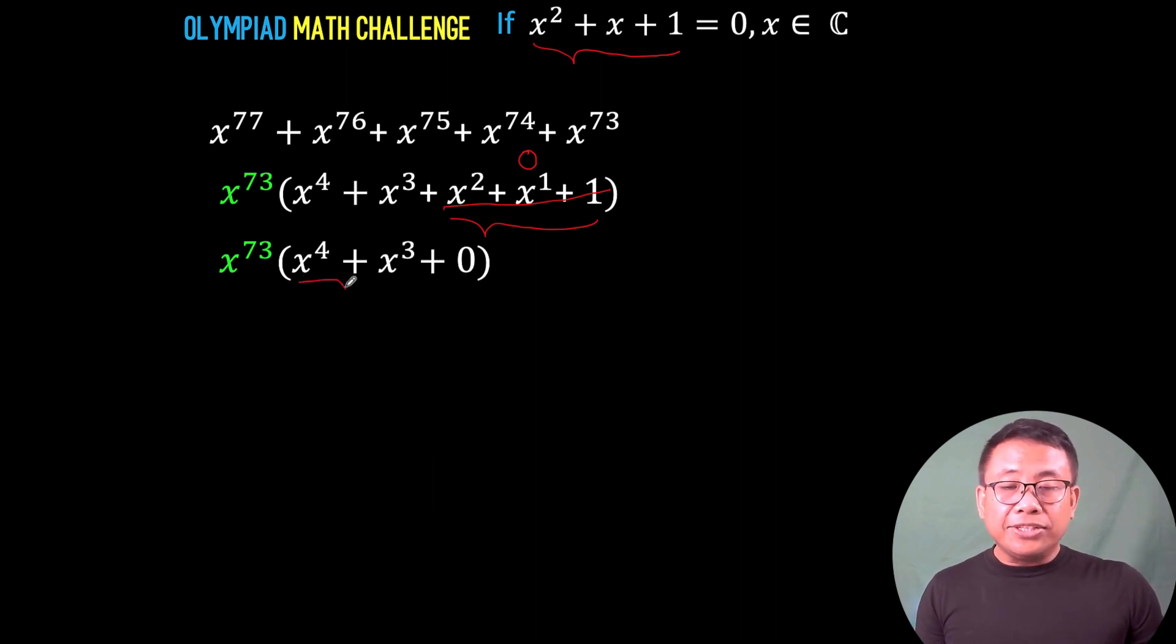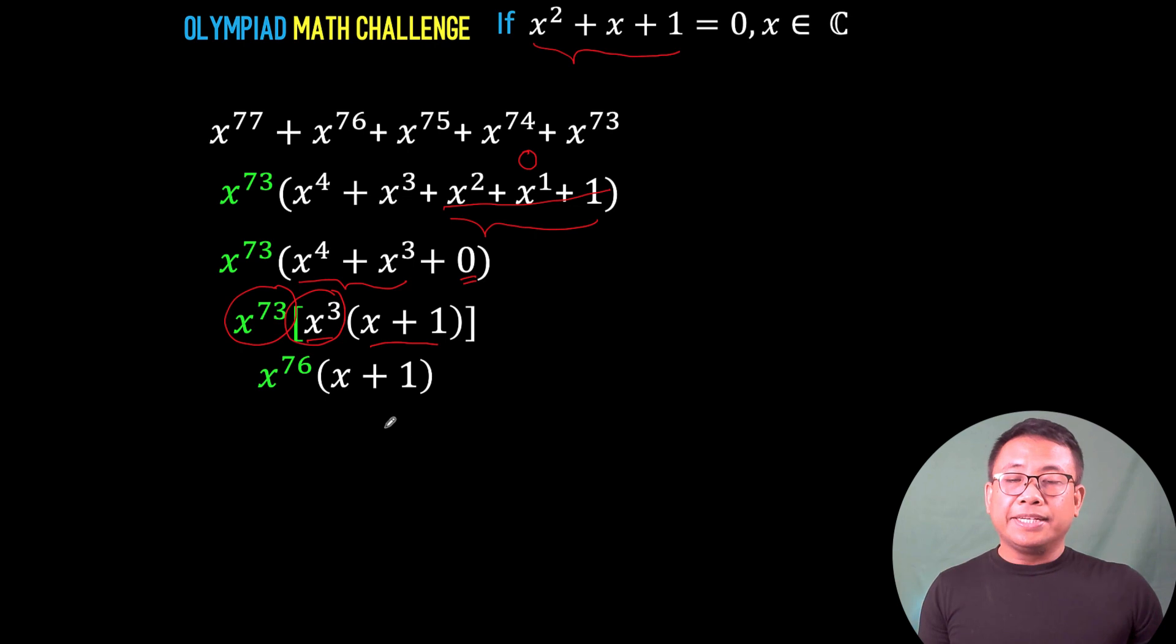Now, look at x^4 and x³. There is a common factor again of x³, which we factor out, and divide each of these terms by x³. We arrive at x + 1. Then, we can multiply x^73 by x³ to arrive at x^76, and we copy x + 1.